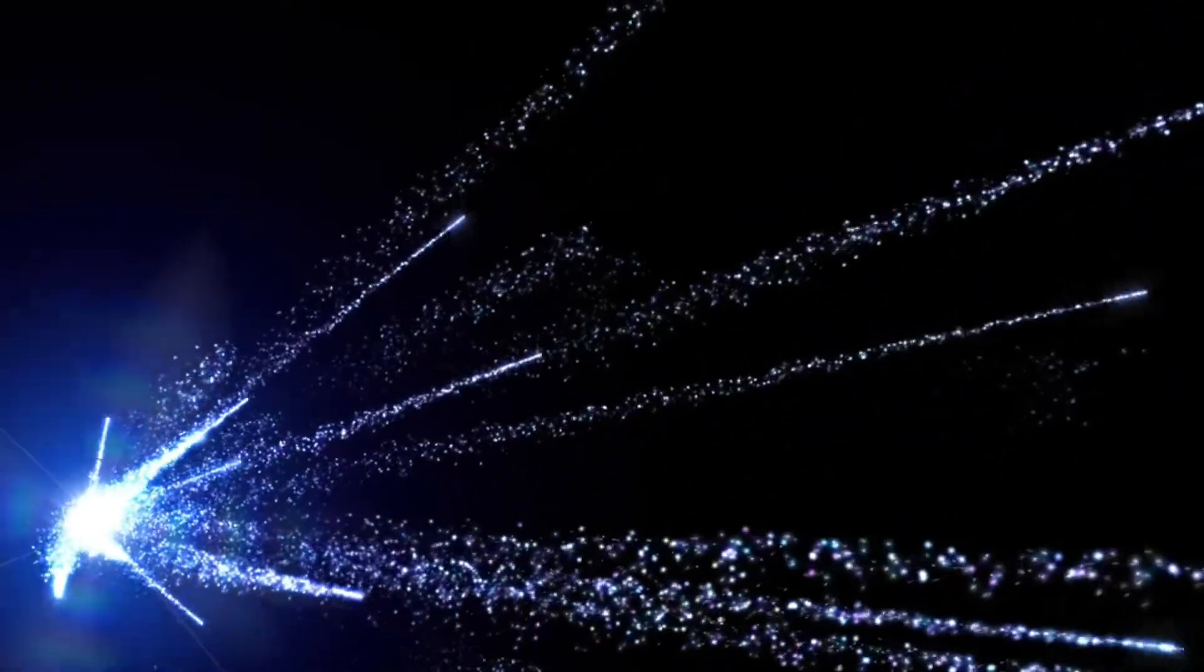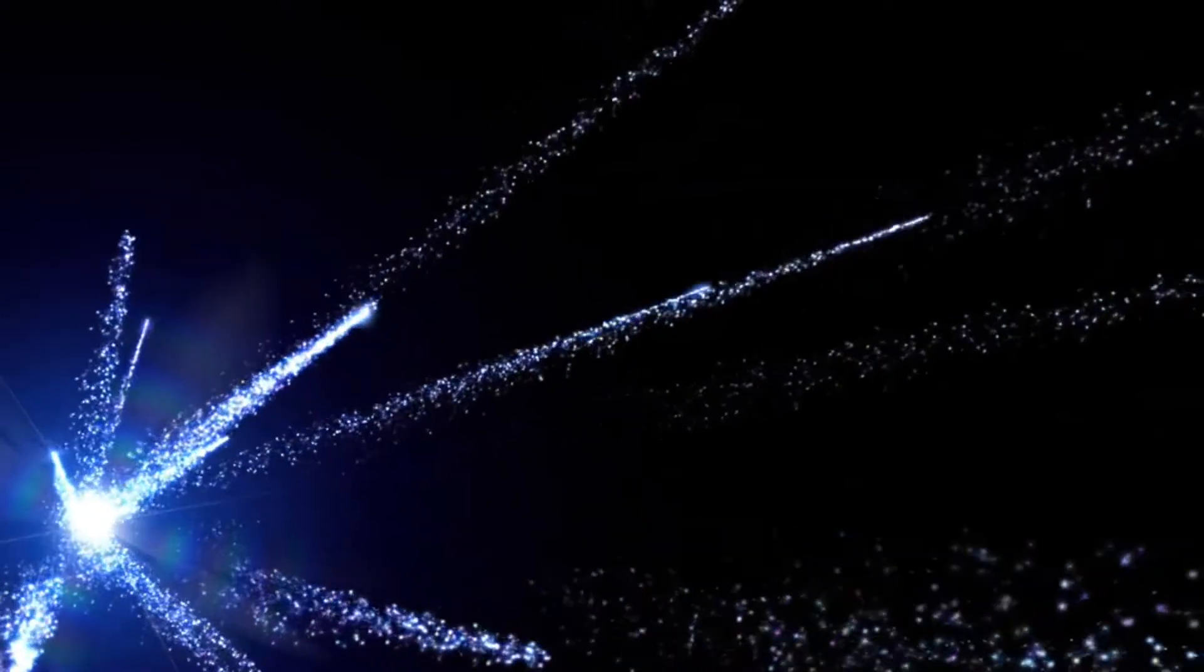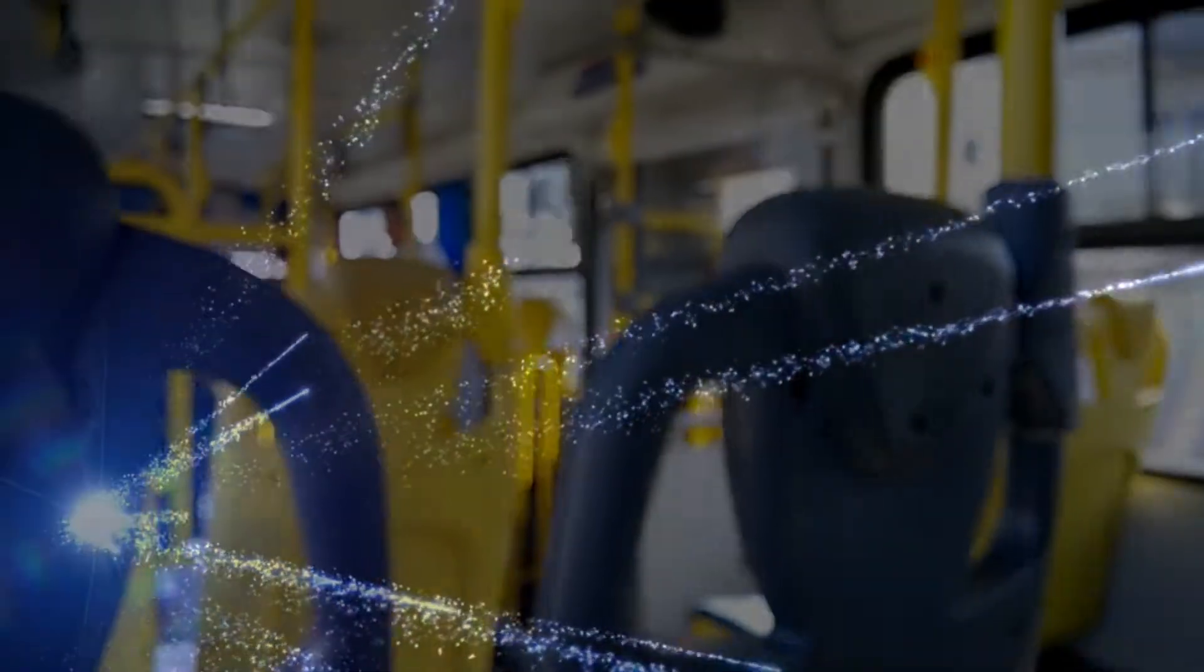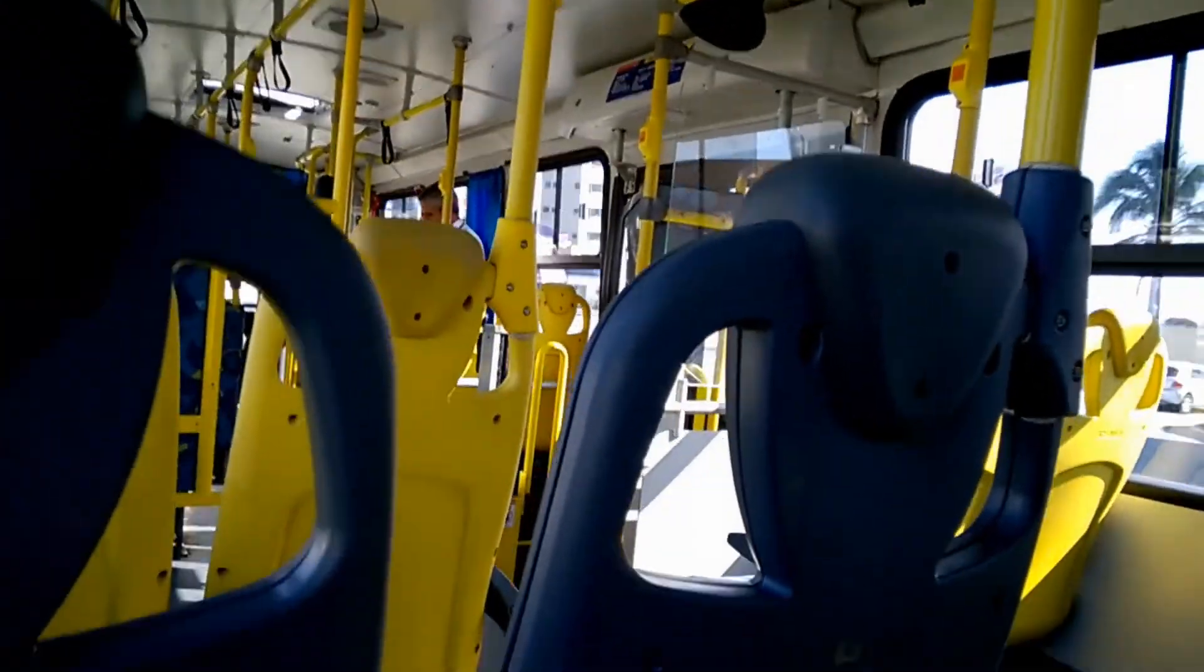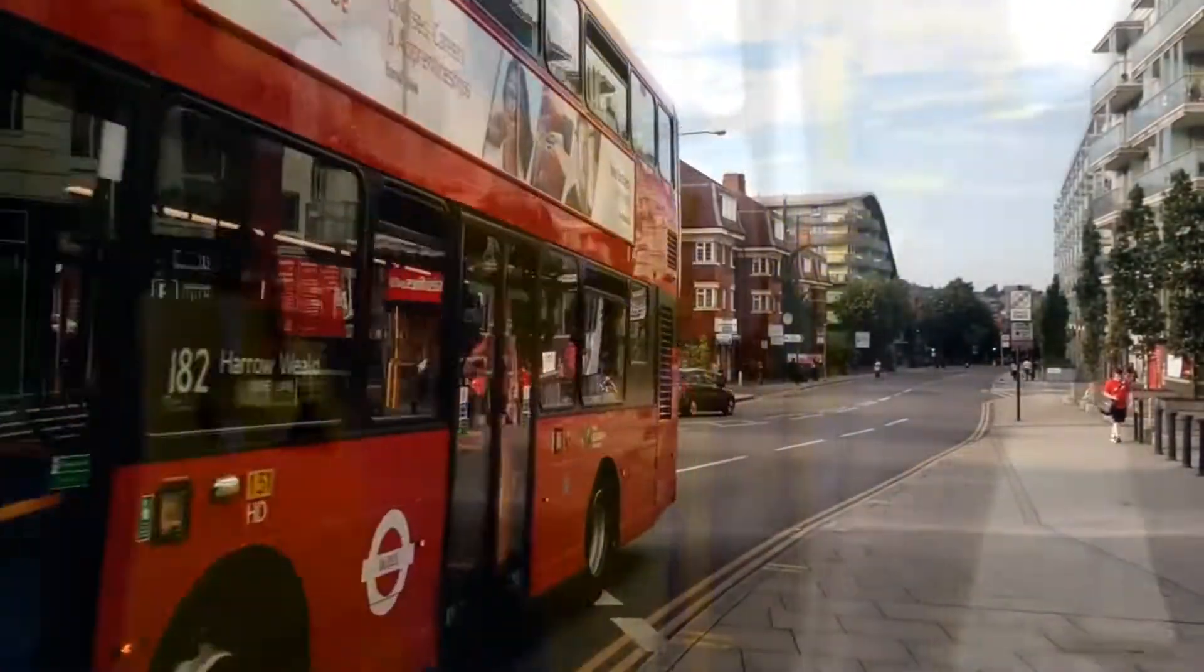An object is in motion when its distance from another object is changing. Whether the object is moving or not depends on your point of view. For example, a woman riding in a bus is not moving in relation to the seat she is sitting on, but she is moving in relation to the buildings the bus passes.